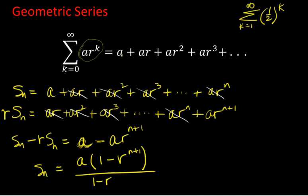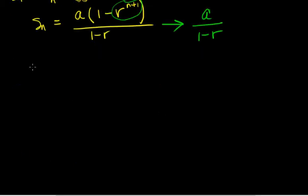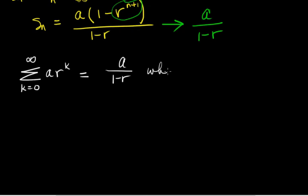I can solve for S_n by factoring: S_n equals a times (1 minus r^(n+1)) over (1 minus r). We know from our study of sequences in 11.1 that r^n converges to 0 when the absolute value of r is less than 1. So S_n will converge when |r| < 1 to a·(1 minus 0) over (1 minus r), which is a over 1 minus r. So the sum from k equals 0 to infinity of a·r^k equals a over 1 minus r, when the absolute value of r is less than 1.